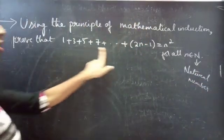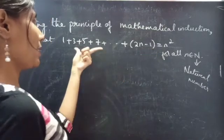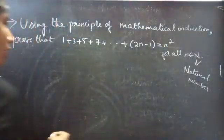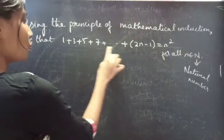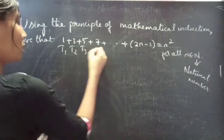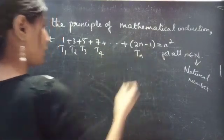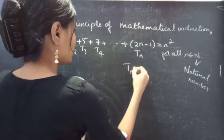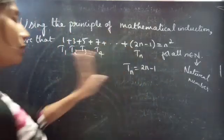Here we are given the sum of n terms in the LHS which is equal to n squared in the RHS. We have 1, 2, 3, 4 and so on up to n terms: t1, t2, t3, t4, and so on up to tn. Here tn is the nth term. Let's represent the nth term by tn.